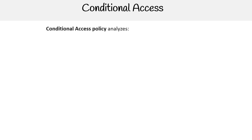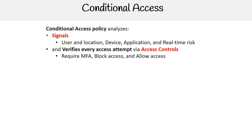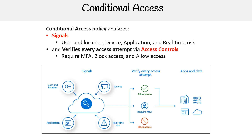A conditional access policy analyzes signals — signals could be user and location, device, application, and real-time risk. We'll go into more detail with all the types of signals in the next slide. The idea is you need to verify every access attempt through access control — you might require MFA, block access, or allow access. Here's a visual from the Microsoft documentation showing signals: user and location, application, real-time risk, and device, all feeding into verification to gain access to apps and data.